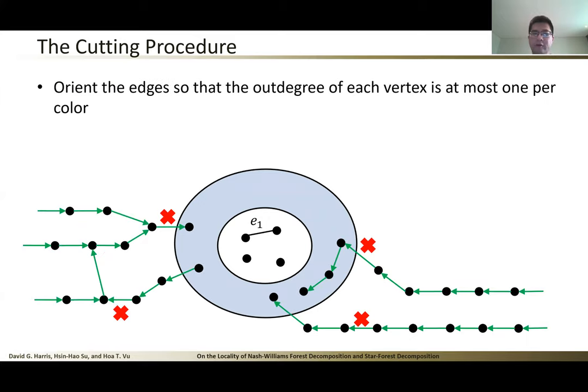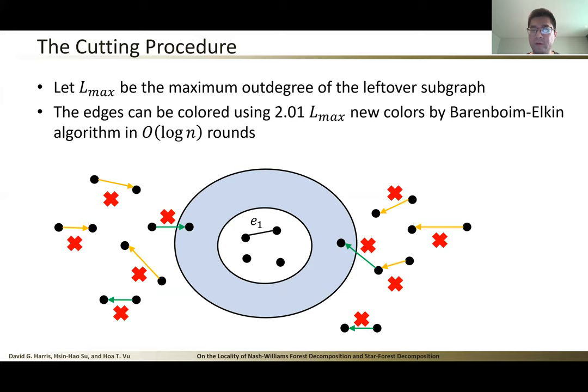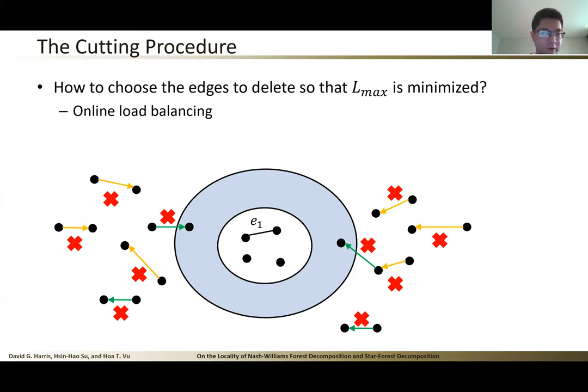Basically what we did is that for each color, we can orient the edges such that the out-degree of each vertex is at most one. This is doable because for each color, each color induces a forest. So we can just orient the edges towards the root of each tree. So this is doable. Then we keep the orientation when we delete the edges. Same for the other colors as well. So in the end, we look at those directed edges and they form a directed graph. Let L_max be the maximum out-degree of the deleted subgraph. We know that the arboricity of the deleted subgraph will be upper bounded by L_max, which means that we can recolor these edges using O(L_max) new colors by Barenboim-Elkin's algorithm in polylog n rounds.